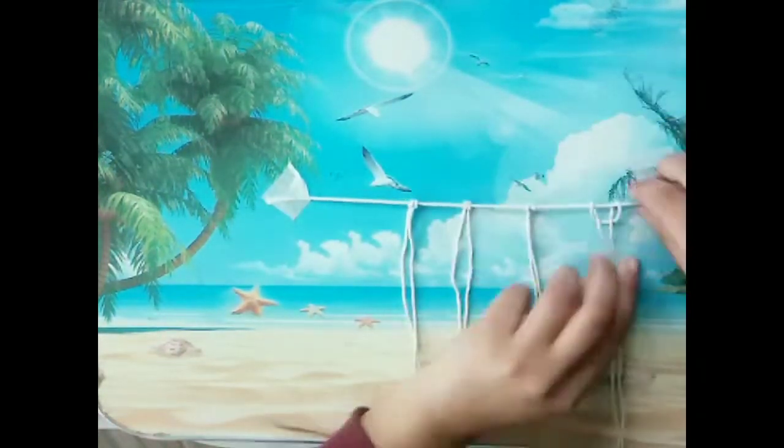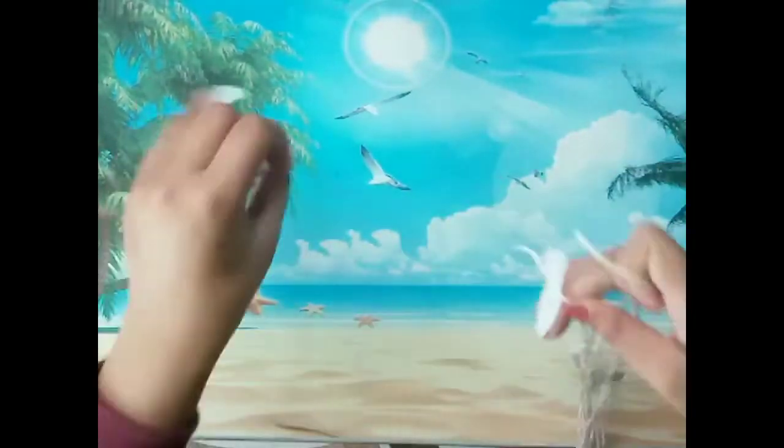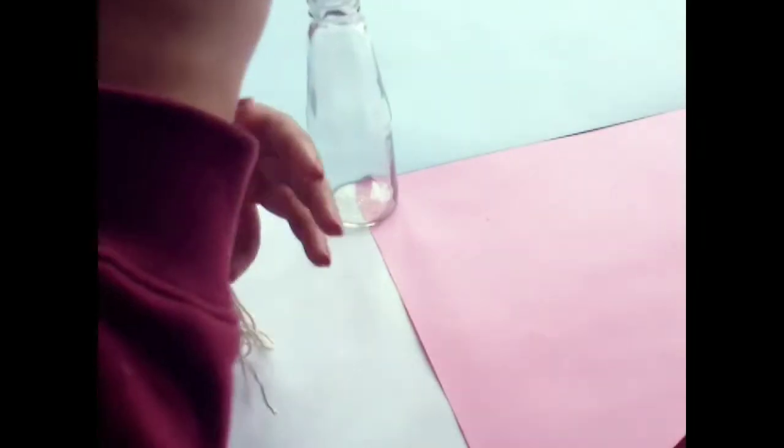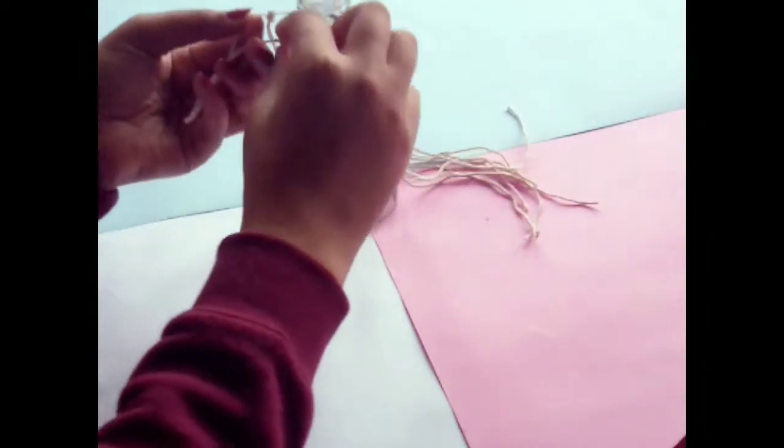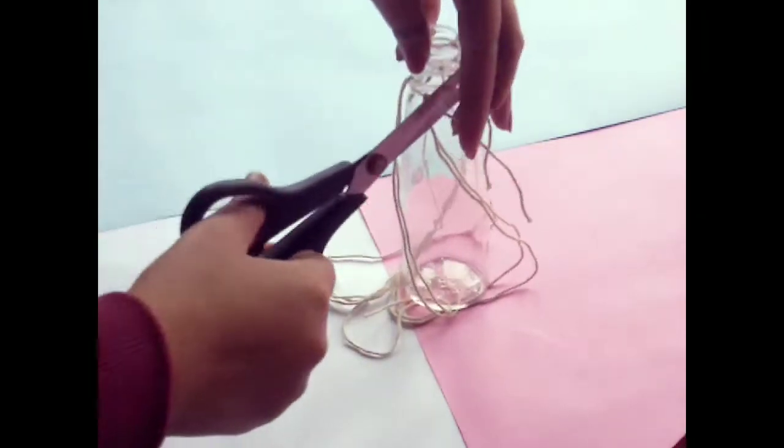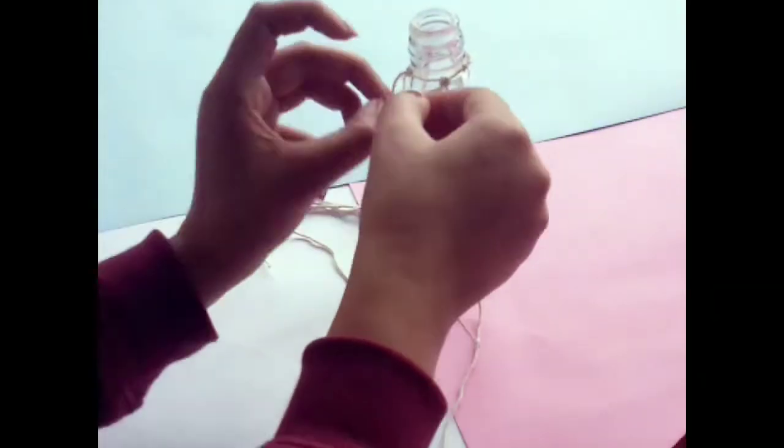After that, I am going to wrap the twine around the bottom of the bottle and cut off the excess twine.